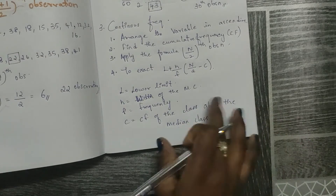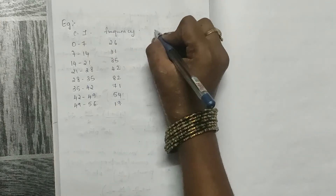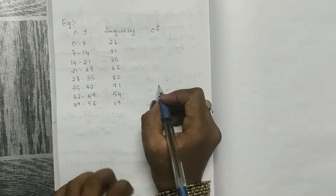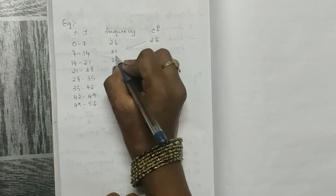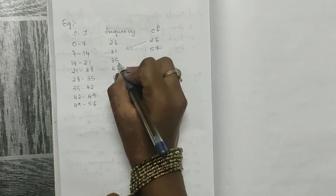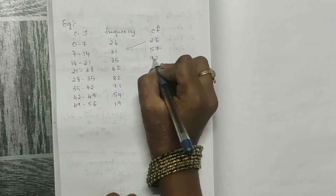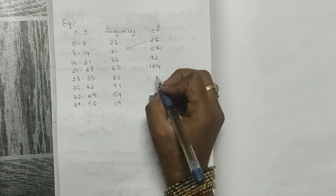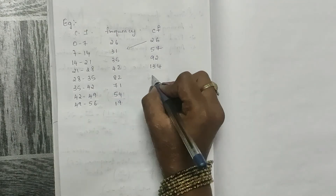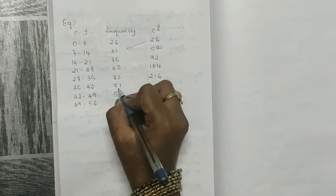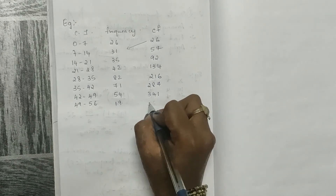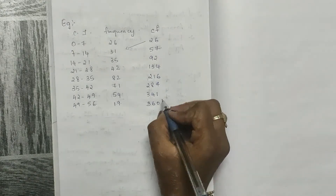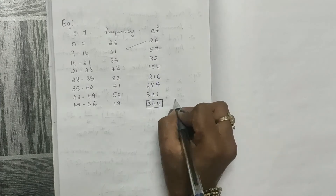Now let's solve an example on continuous frequency. First, find the cumulative frequency: the first value is 26. Then 26+31=57, 57+35=92, 92+42=134, 134+82=216, 216+71=287, 287+54=341, 341+19=360. So n equals 360.